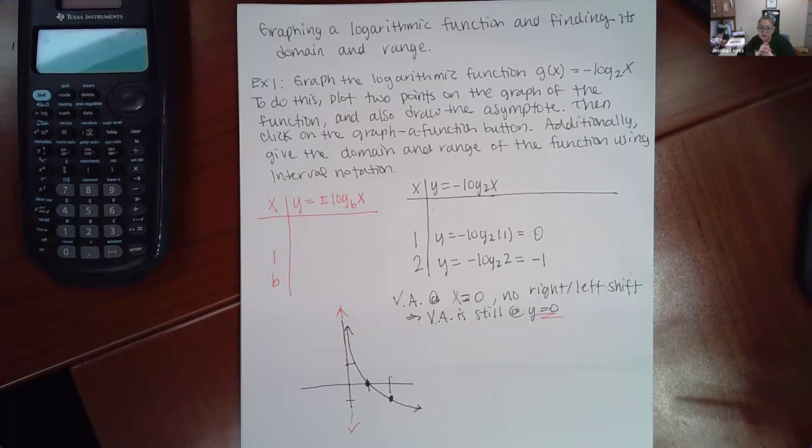To do this, plot two points on the graph of the function and also draw the asymptote. Then click on the graph function button. Additionally, get the domain and range of the function.